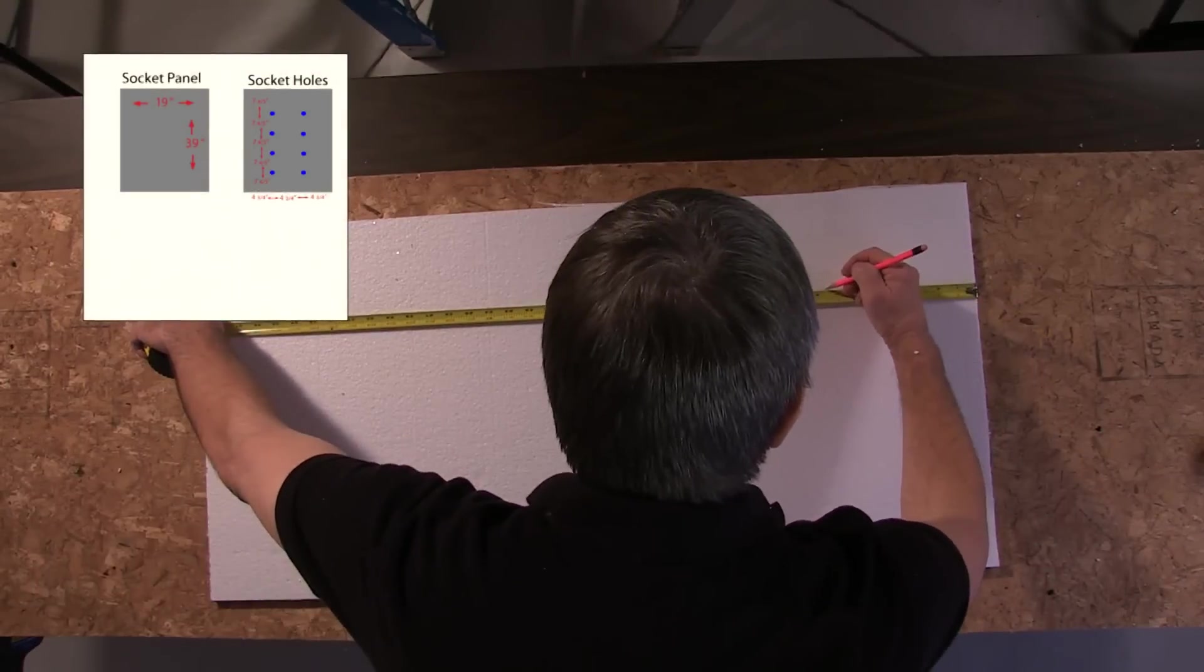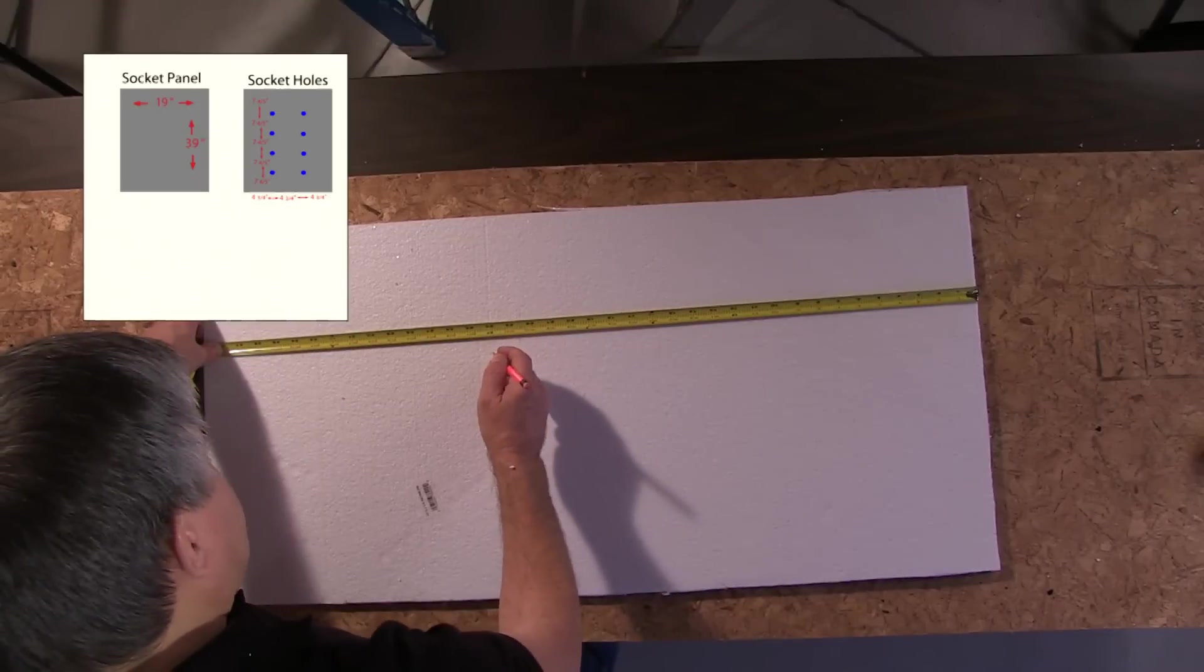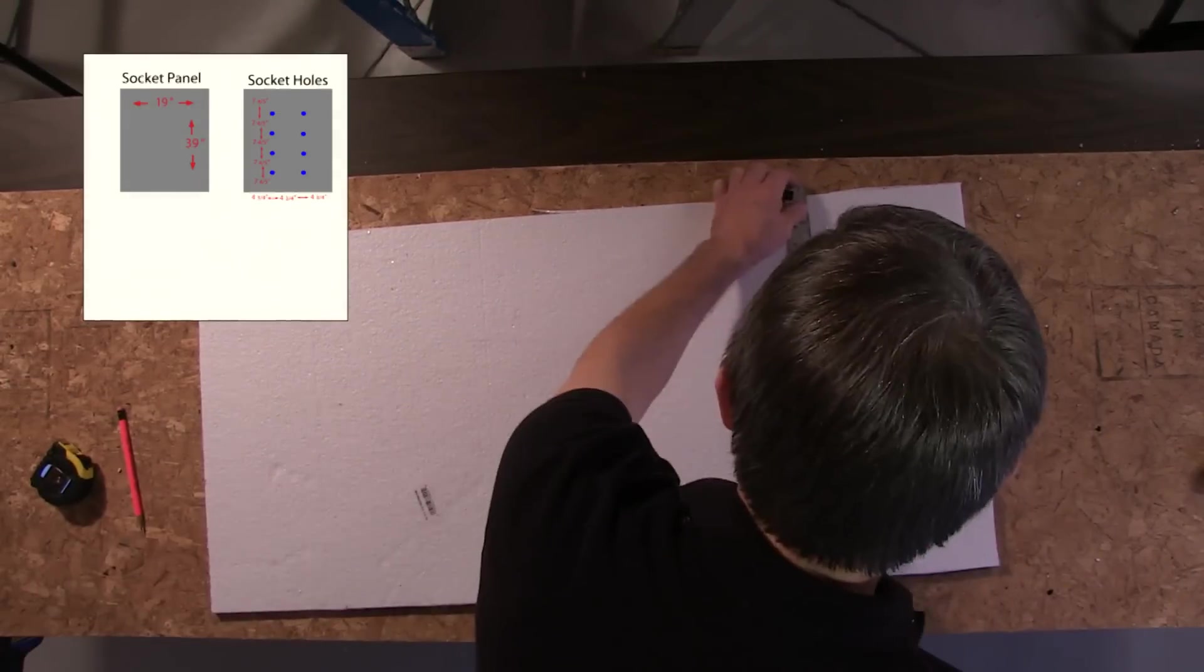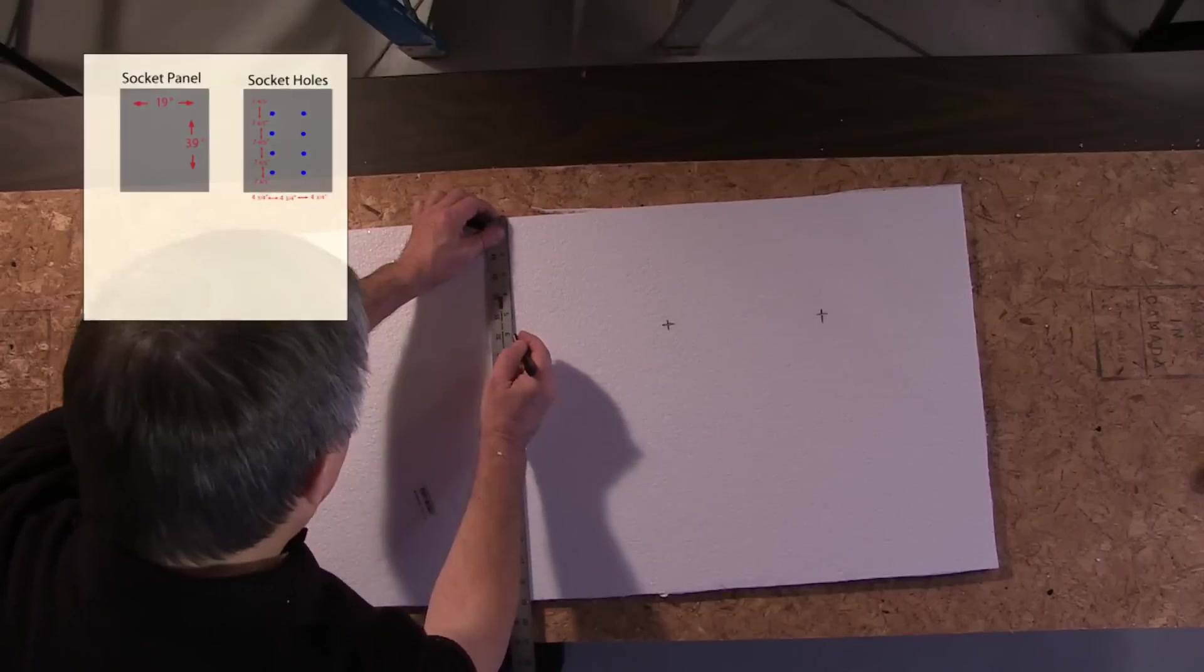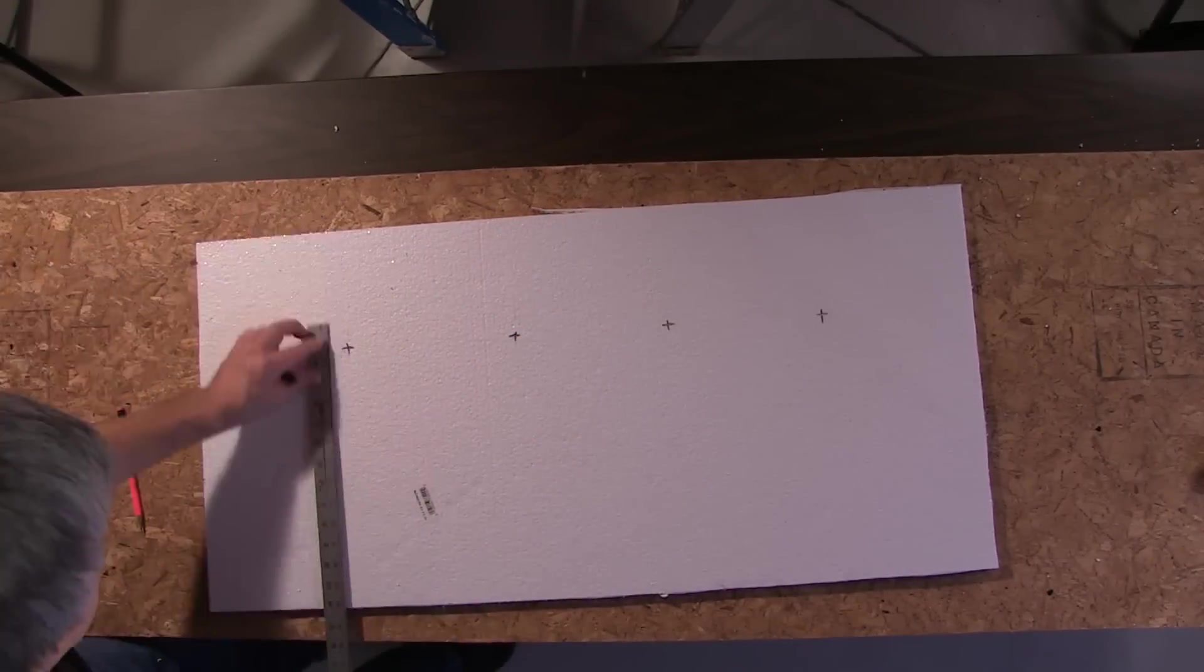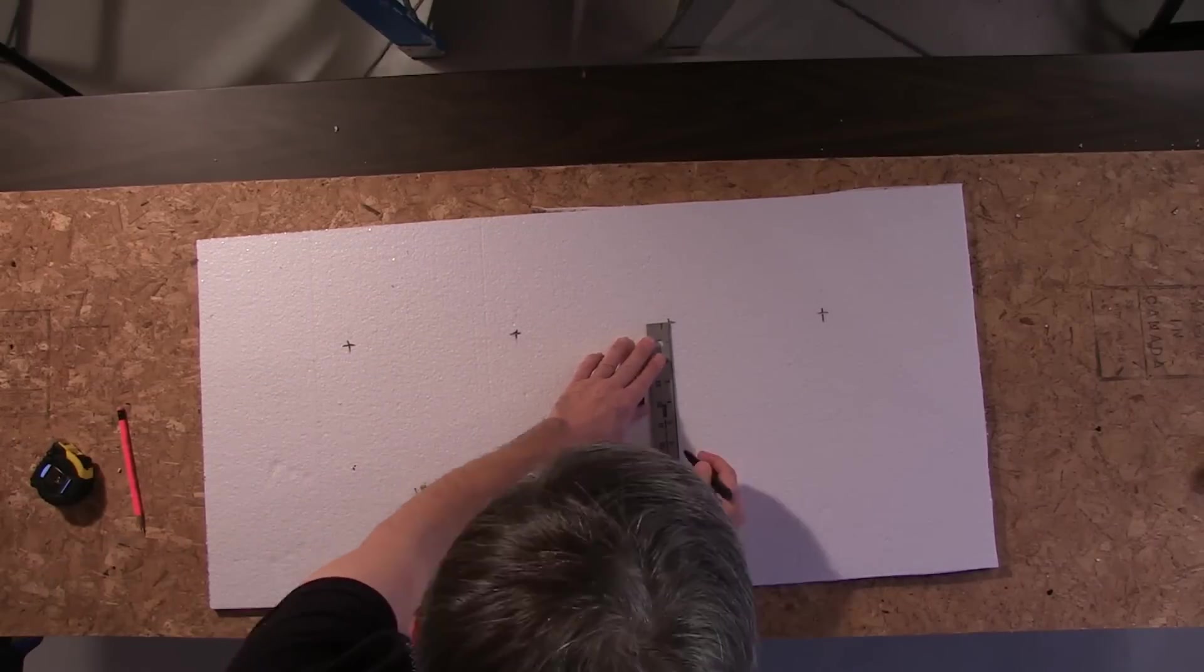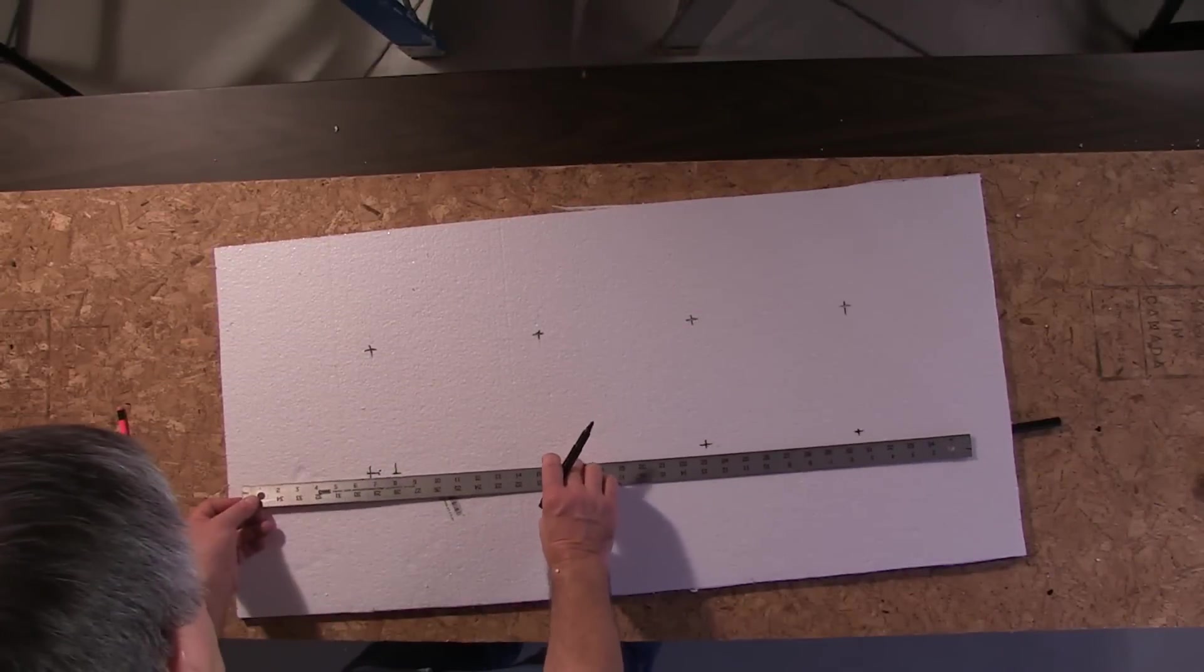The socket holes will be measured out in increments of 5 high and 3 across. So that'll be 7 and 4 fifths and 4 and 3 quarters. That's the center mark. This will be the center of the square. And it doesn't have to be exact when you cut it out. It could be off a little bit.